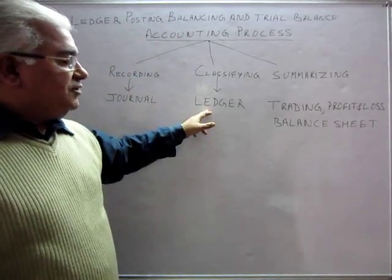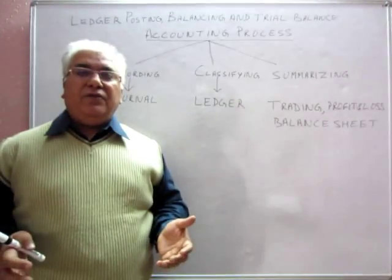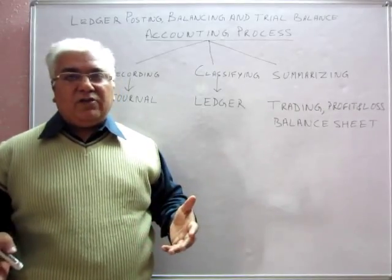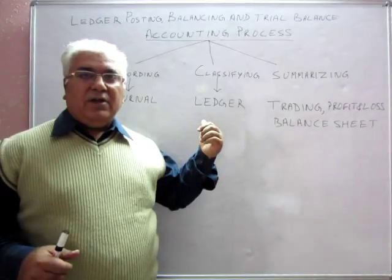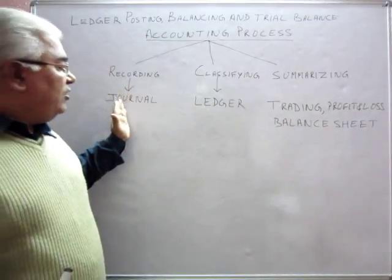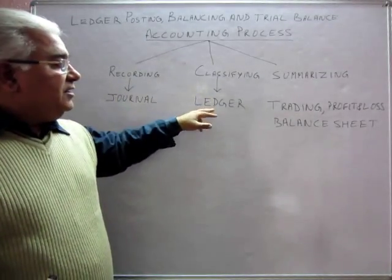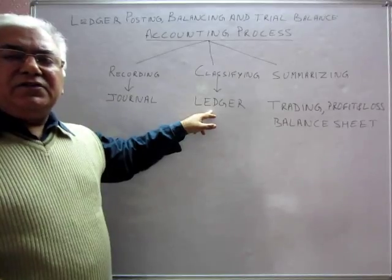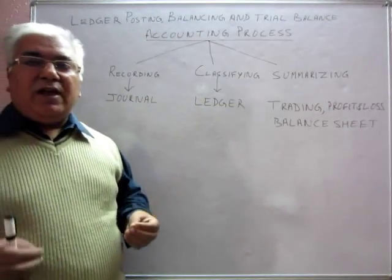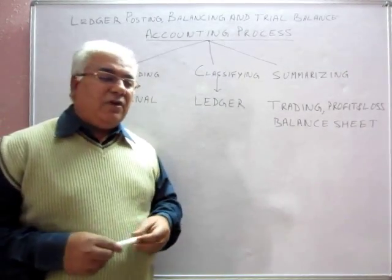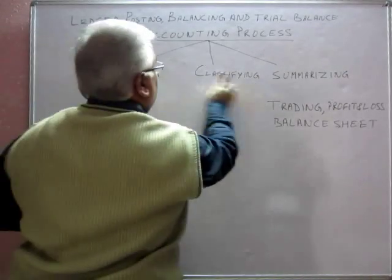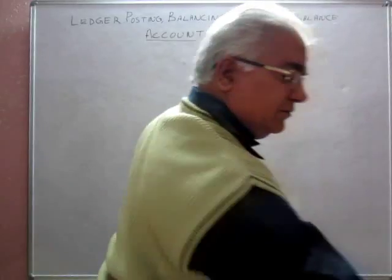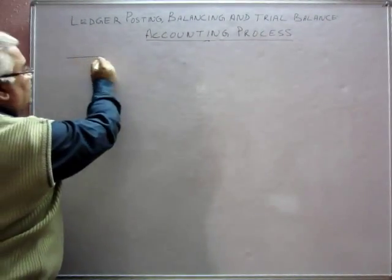Today we are talking about ledger posting and balancing, which is done in the ledger. What is a ledger? A ledger is a book wherein we have all the accounts — personal accounts, real accounts, and nominal accounts. From the journal, all entries are posted to the ledger, which contains accounts like cash, bank, building, machinery, salaries, wages, and so on.